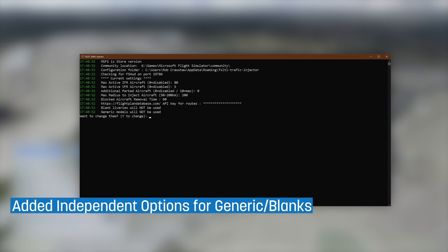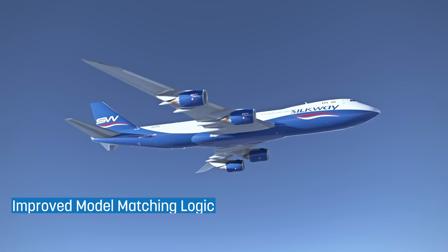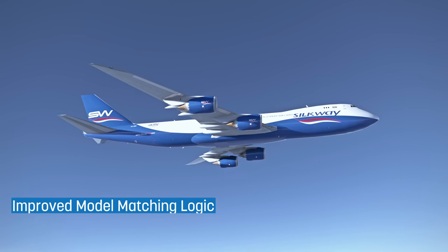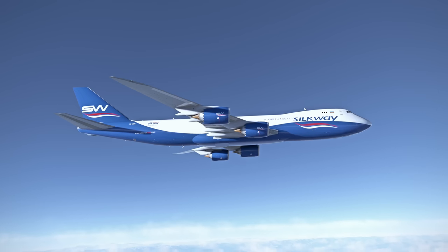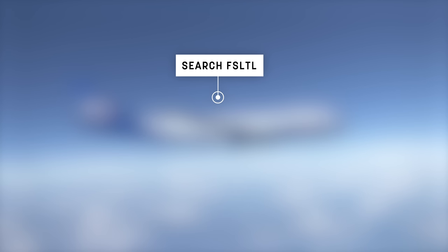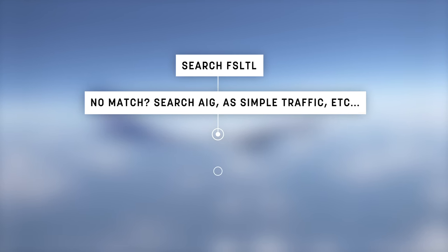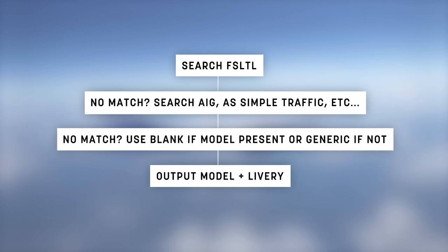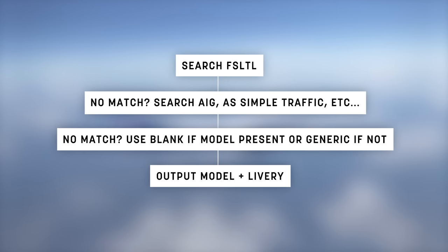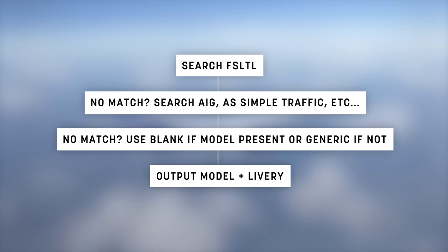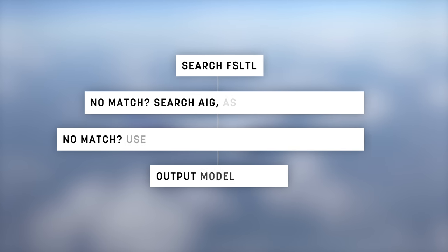Another new option added for the injector is independent control of showing blank liveries or the Asobo generic models. Upon starting the injector, you can toggle either of these on or off to your liking. A rework has also been made on the injector's model matching logic, so if you have any other AI traffic packages installed such as AIG, this should improve the results. The injector will first look for the correct aircraft livery and model from the FSLTL package, then if no match is found it will look in any other AI traffic package you have installed, and finally if no match is found it will choose a blank or generic model depending on your injector config. This improves model matching in cases where it was previously choosing a generic or blank livery when a matching livery from a different package was available.